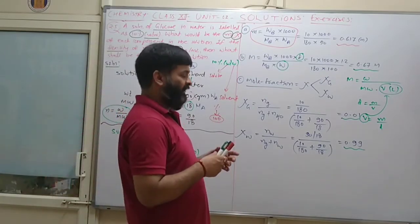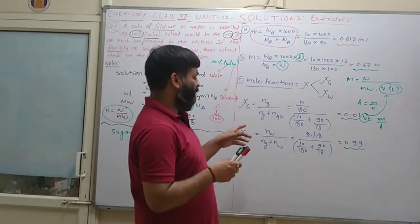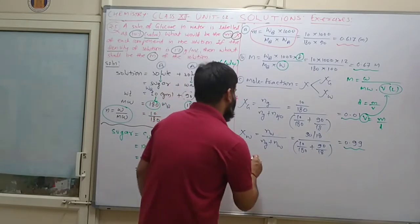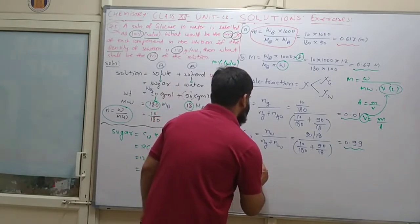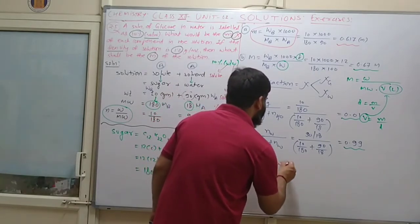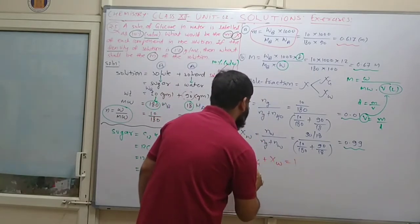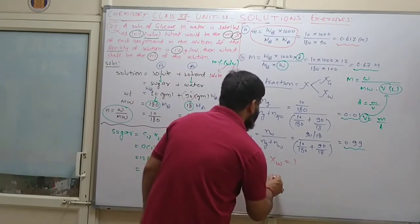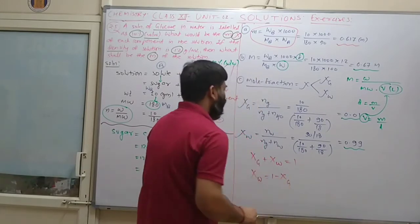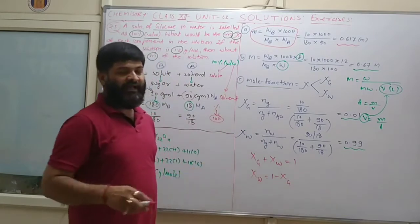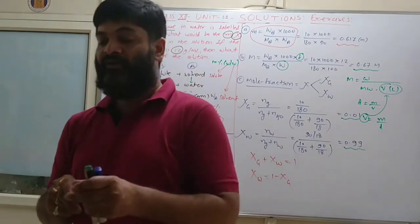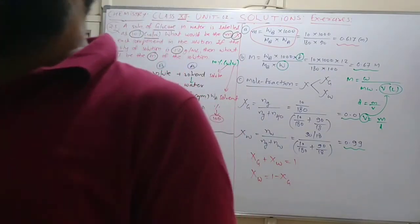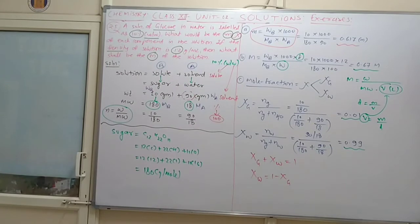Another method: since chi_A + chi_B = 1, if one mole fraction is known, the other can be found by subtracting from 1. This completes question 2.5.